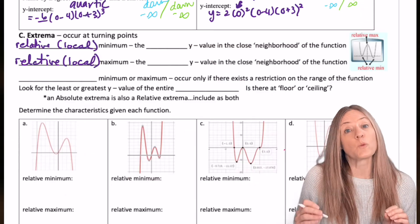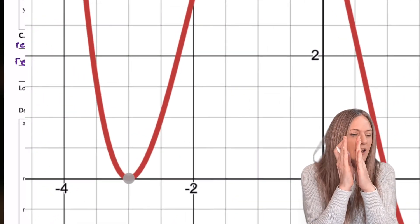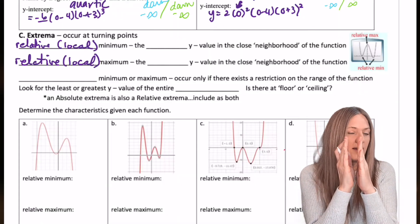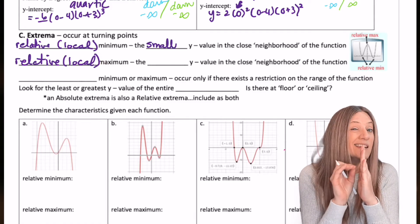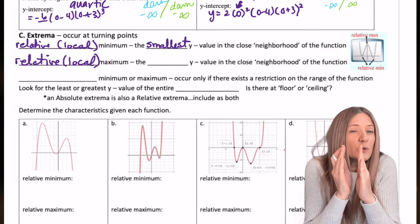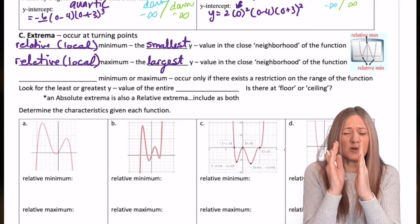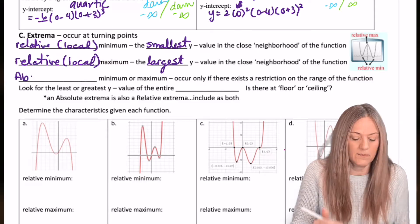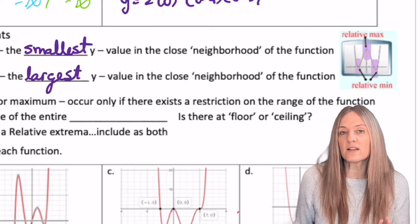If I have a relative or a local minimum, that means that I've zoomed in and I'm only looking at the one little part of the graph, and it happens to have the smallest y value in that near vicinity, so in that close neighborhood. And if I have a relative max, happens to be the largest y value in that small neighborhood. In the graph, you can see that we have two relative mins and one relative max.